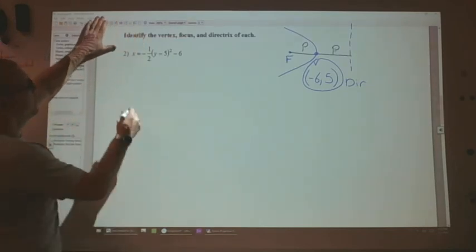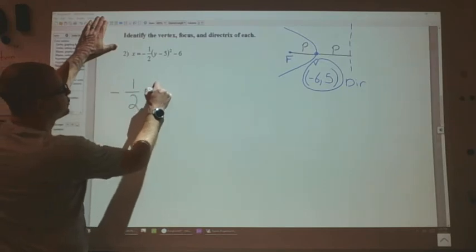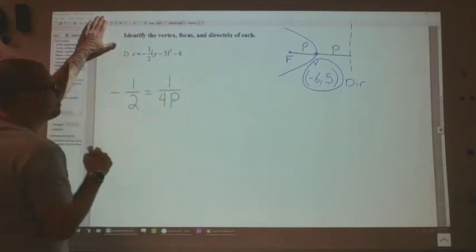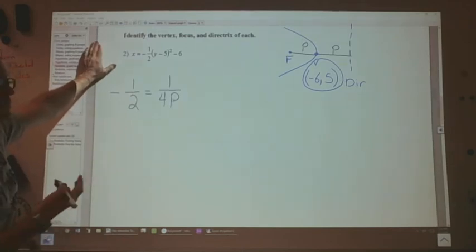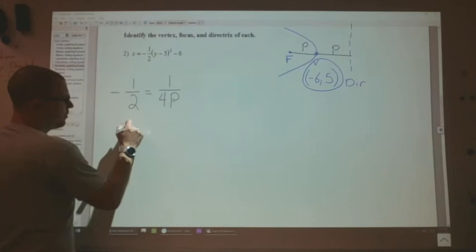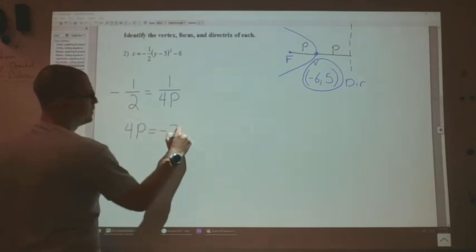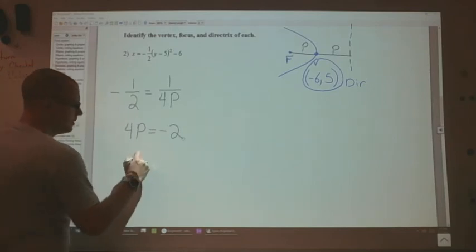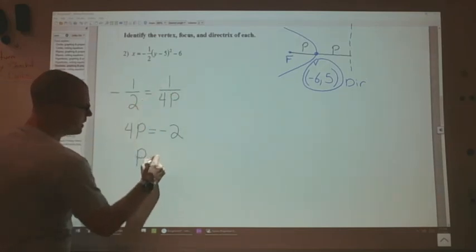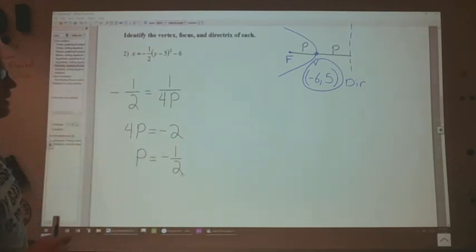And that comes from here. I know that negative 1/2 is equal to 1 over 4p. So that's just an equation. I can solve that for p. In fact, I know that 4p is equal to negative 2 by cross multiplication. And p then would be equal to negative 1/2, dividing by 4 and simplifying.